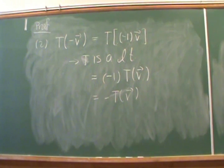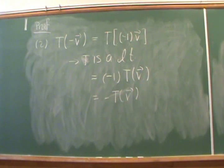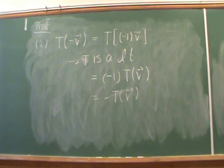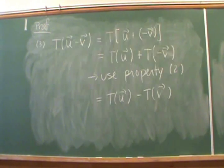Proof two doesn't need too much justification. We're just going to write negative v as negative one times v — we're allowed to do that because V is a vector space. Then we use the fact that T is a linear transformation to factor out that minus one in front of T.